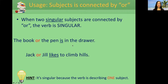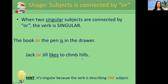Another usage: when two singular subjects are connected by 'or,' the verb is singular. For example, 'the book or the pen is in the drawer.' Another one: 'Jack or Jill likes to climb hills.' It's singular because the verb is describing one subject — the book or the pen.